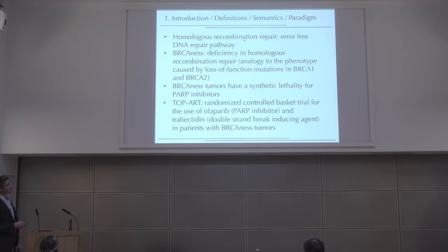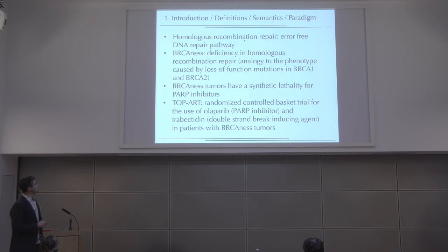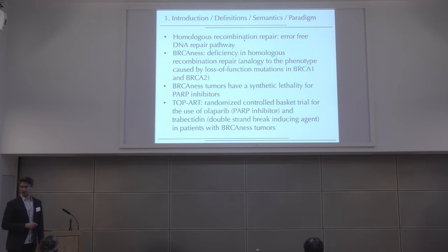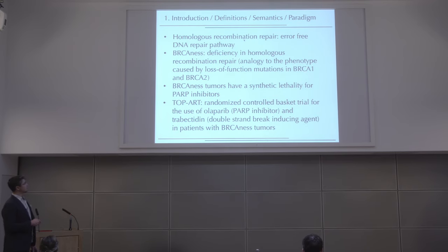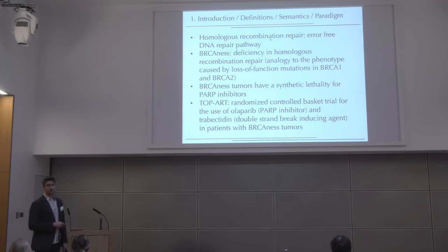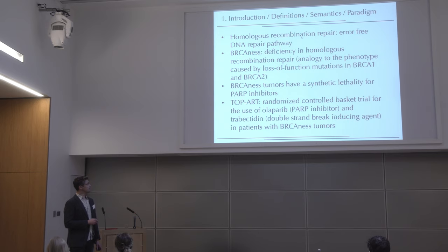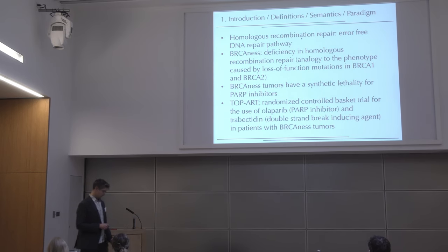BRCAness was first observed in patients with mutations in these genes — the abbreviation comes from 'mutated in breast cancer.' BRCA1 was historically the first found, BRCA2 was found afterwards. BRCAness tumors have a synthetic lethality to a group of drugs called PARP inhibitors. This talk will lead to the TOPART trial, a randomized controlled basket trial for Olaparib — one of these PARP inhibitors — together with trabectedin, a double-strand break-inducing agent, in patients with BRCAness in their tumors.